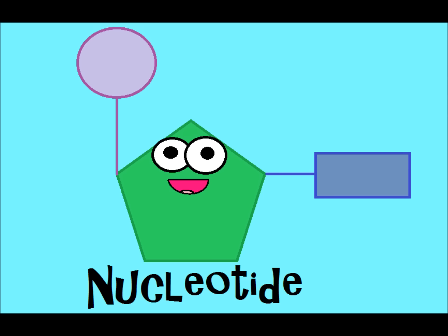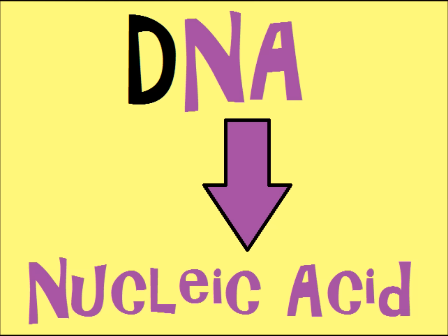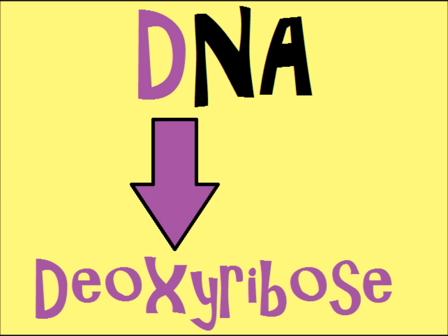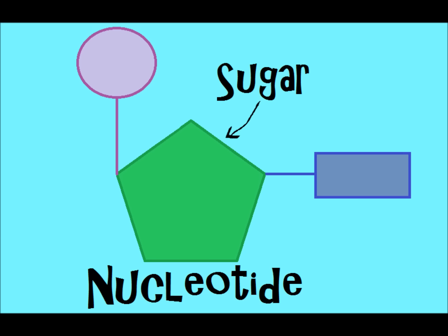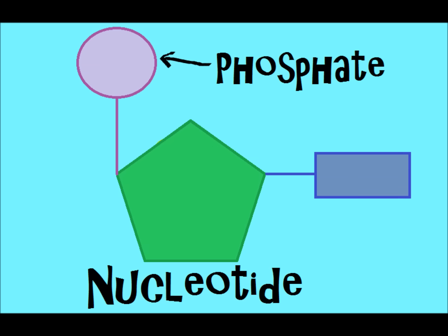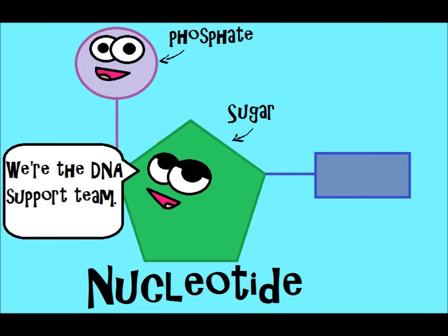Before getting into the three parts of a nucleotide, it's worth pointing out the name DNA. DNA stands for deoxyribonucleic acid — that's what the NA part is: nucleic acid. The D stands for deoxyribo, which refers to deoxyribose, a sugar. So nucleotides have three parts, and one of them is that sugar called deoxyribose. The next part is a phosphate, which works with the sugar to help hold the DNA structure together. Together they form what we call the sugar-phosphate backbone.